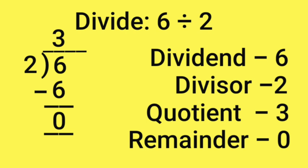Subtract the product of 2 and 3 from the given 6. The remainder is 0. Hence, 6 divided by 2 is equal to 3.